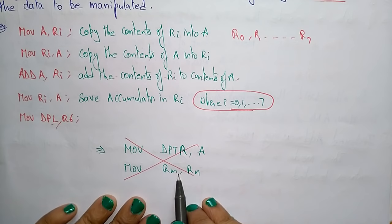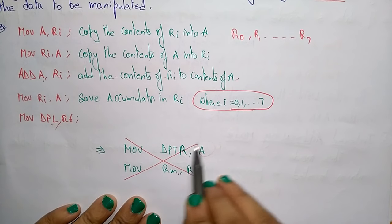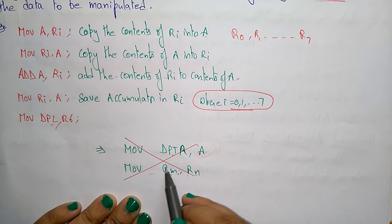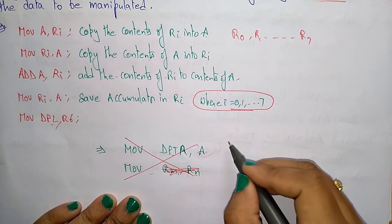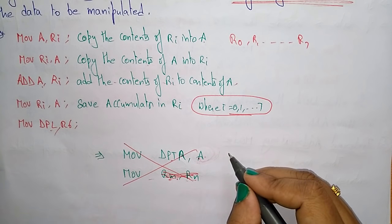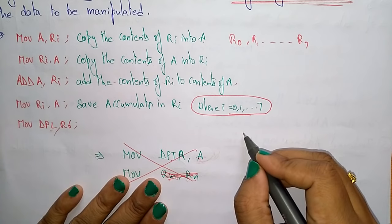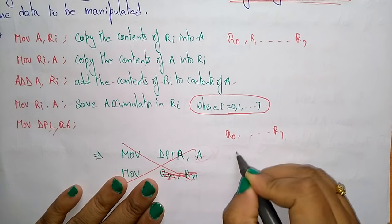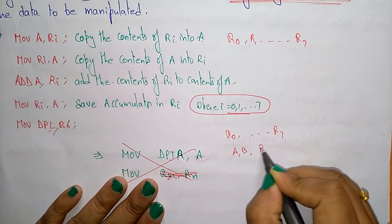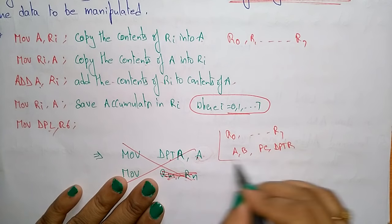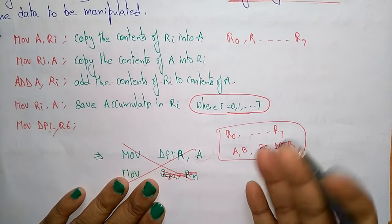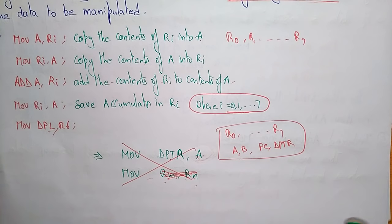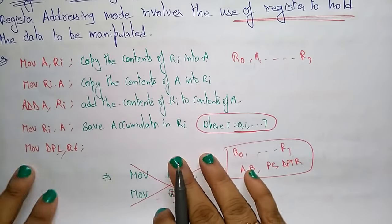Moving the accumulator value directly to DPTR is not possible in register addressing mode. Also, Rm and Rn are not valid registers. The special function registers available in 8051 are R0 to R7, A, B, program counter, and DPTR — only these can be used. Rm and Rn are not registers. That is about the register addressing mode.